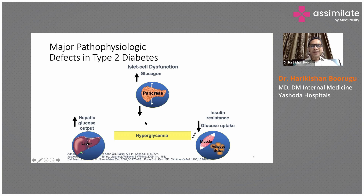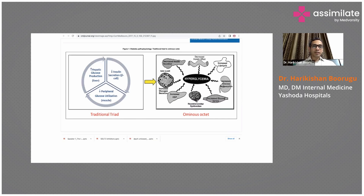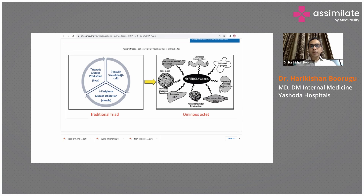This was the traditional triad we used to discuss a decade back. But now, with more knowledge, we talk about the 'ominous octet' — about eight pathophysiologic defects that result in hyperglycemia in patients with diabetes. These include decreased insulin secretion, increased glucagon secretion, and increased glucose production from the liver, which results from reduced insulin and increased glucagon levels.